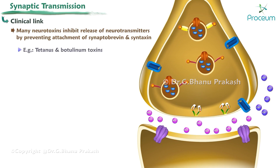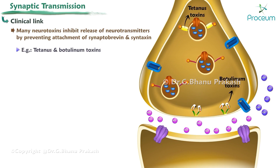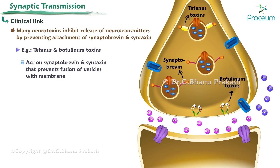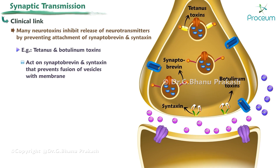Clinical link: Many neurotoxins inhibit release of neurotransmitters by preventing attachment of synaptobrevin and syntaxin. For example, tetanus and botulinum toxins act on synaptobrevin and syntaxin, which in turn prevents fusion of vesicles with the membrane, blocking release of neurotransmitters from presynaptic terminals.